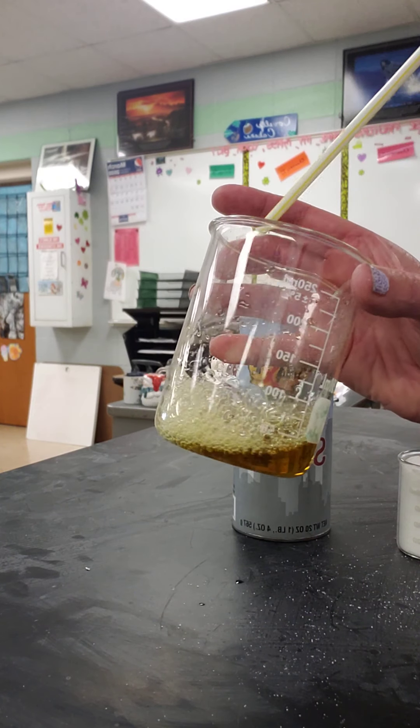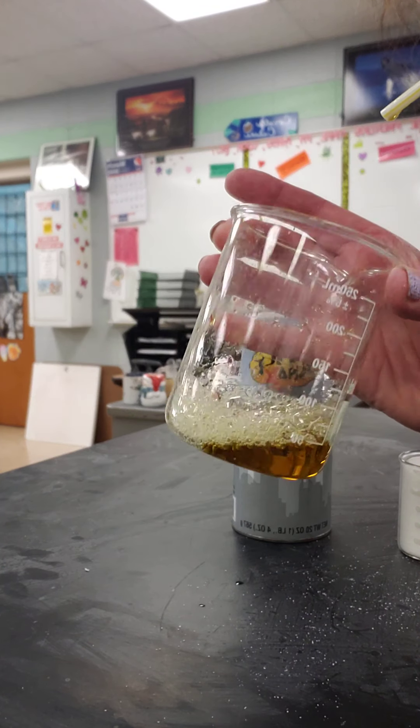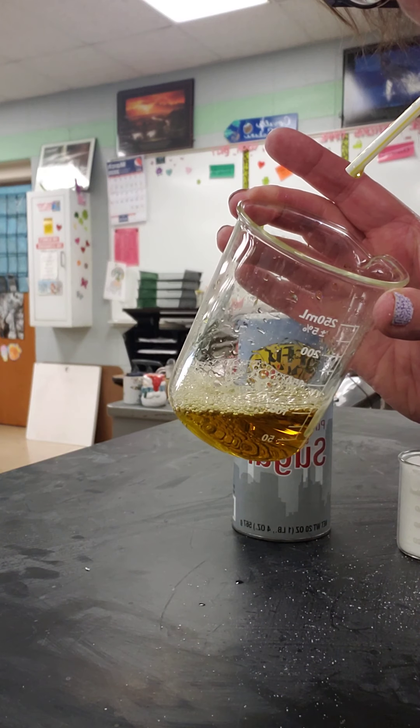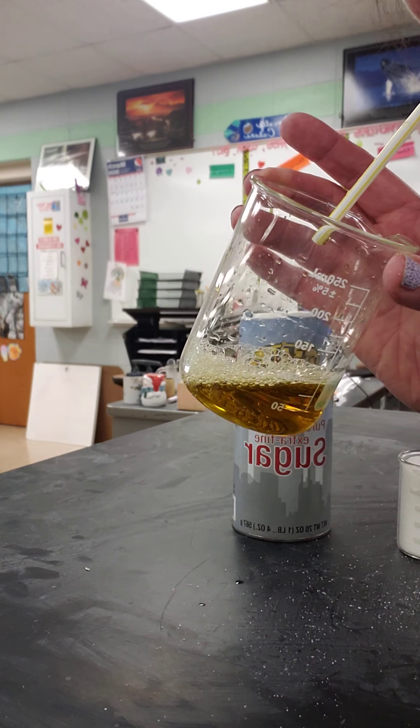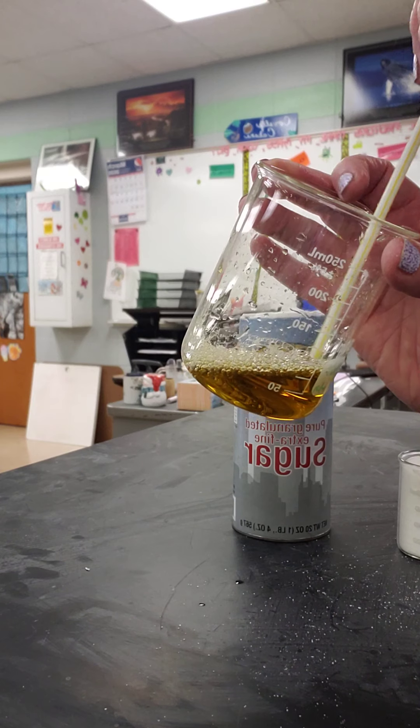All right. So it turned nice and yellow. That means that I breathe out carbon dioxide because my cells are doing cellular respiration.